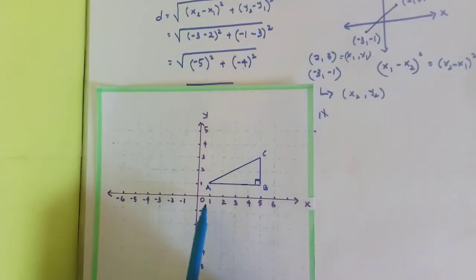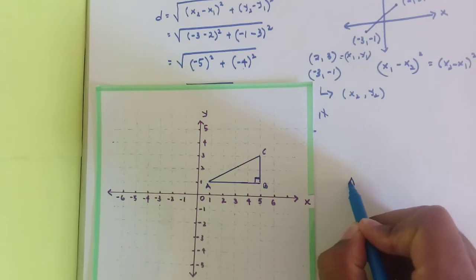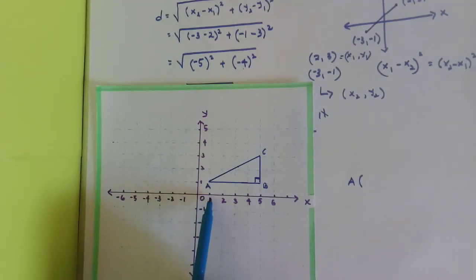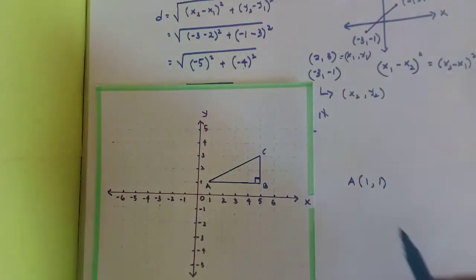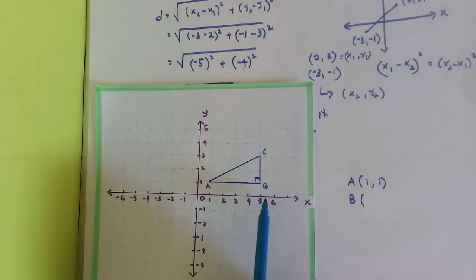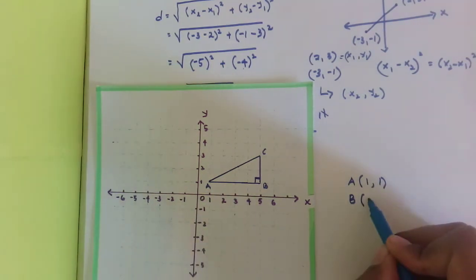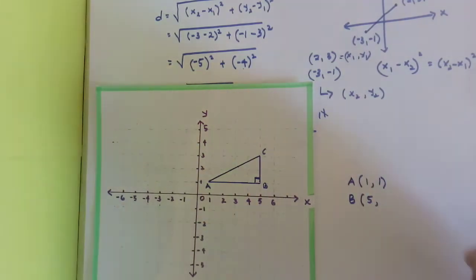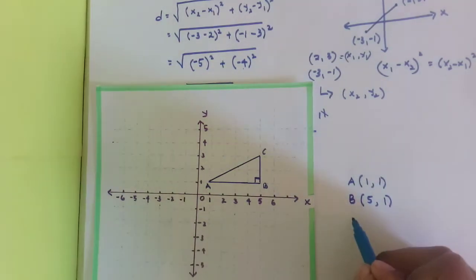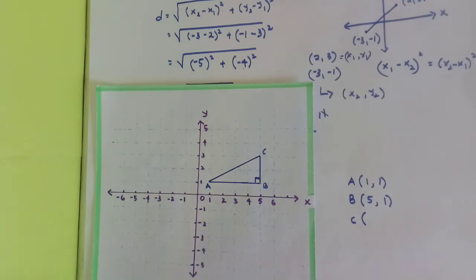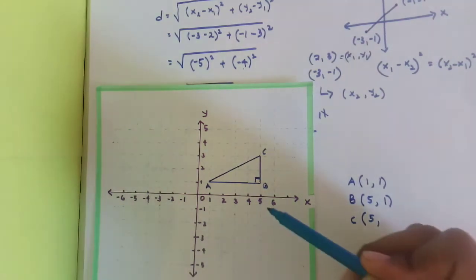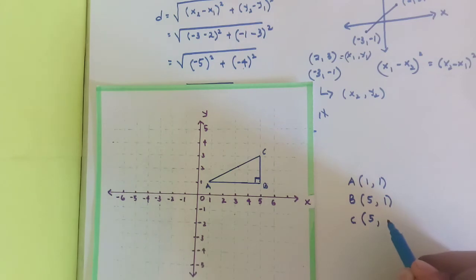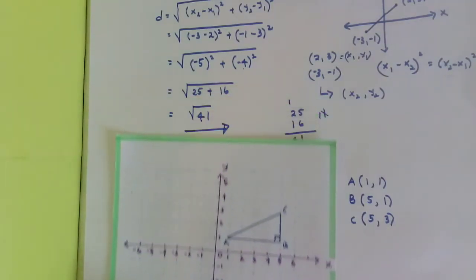Let's identify the coordinates. Point A is at (1, 1), point B is at (5, 1) — five units right and one unit up — and point C shares the same x-coordinate as B, so C is at (5, 3).